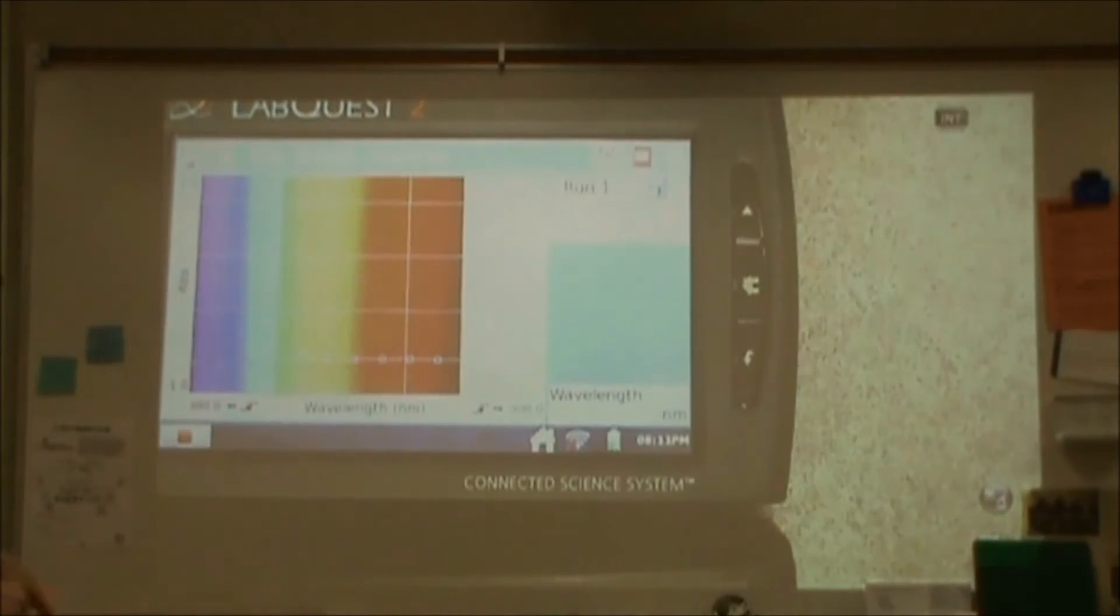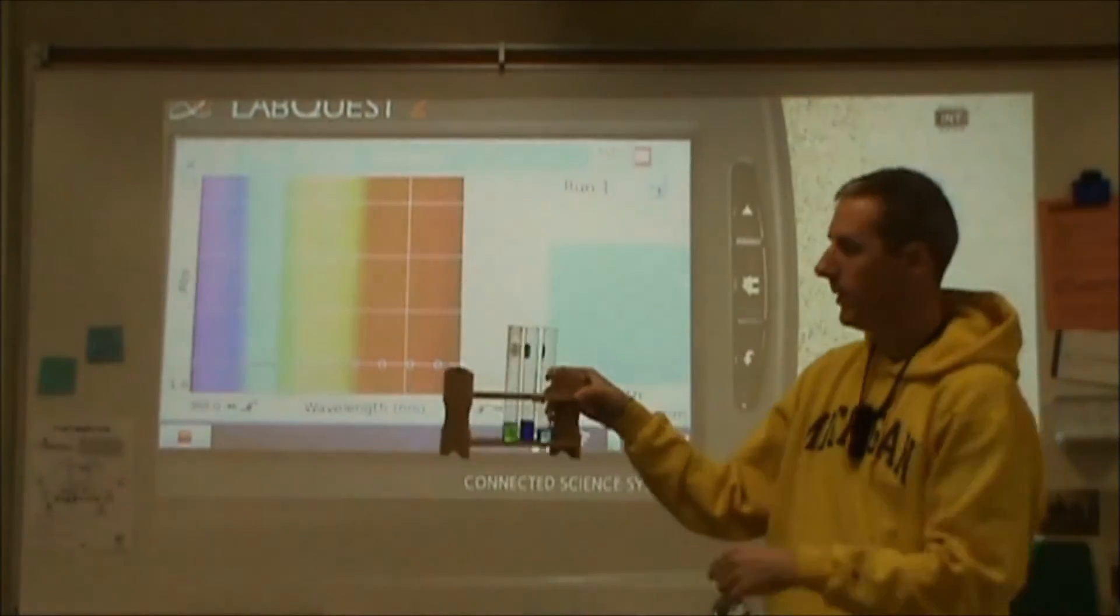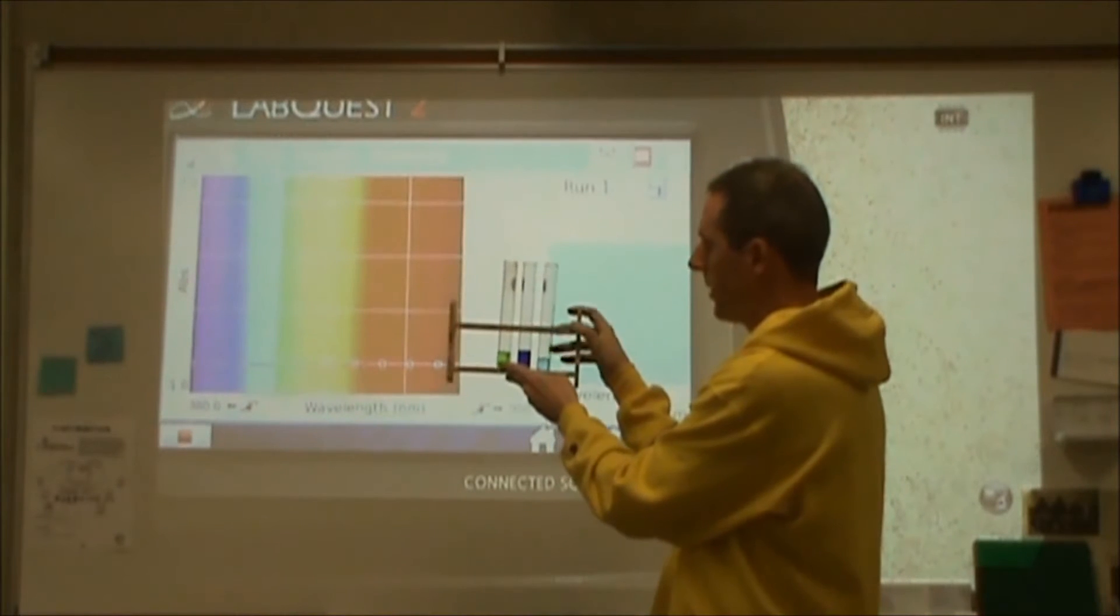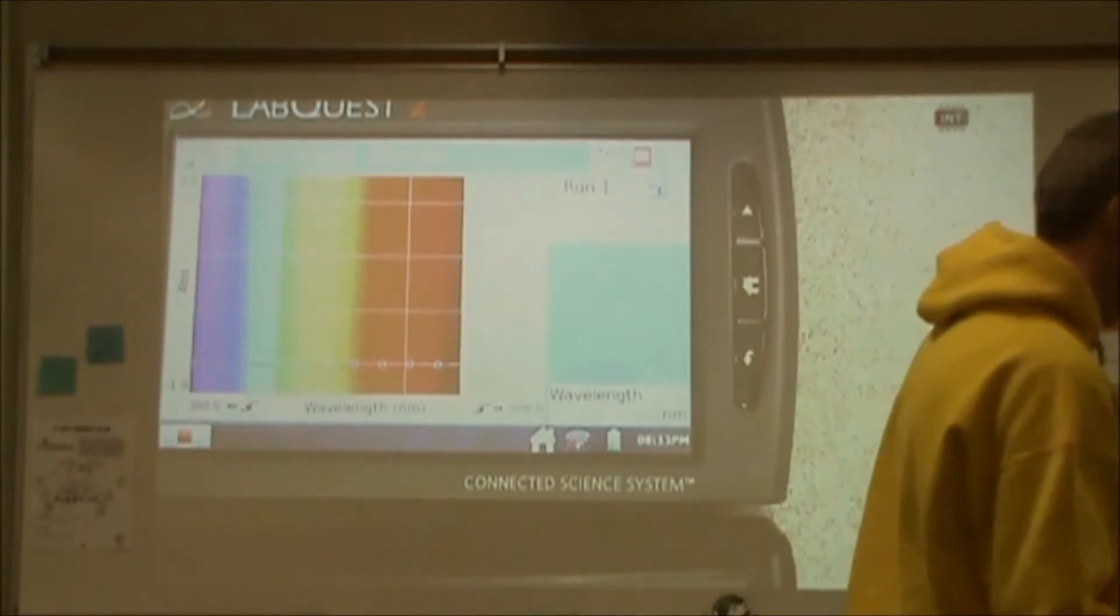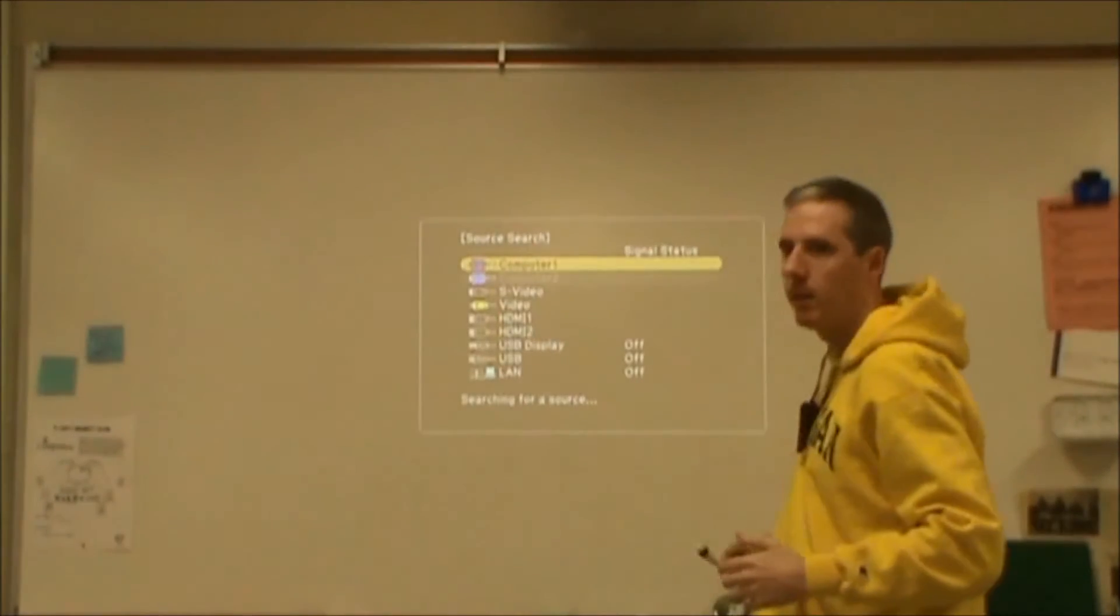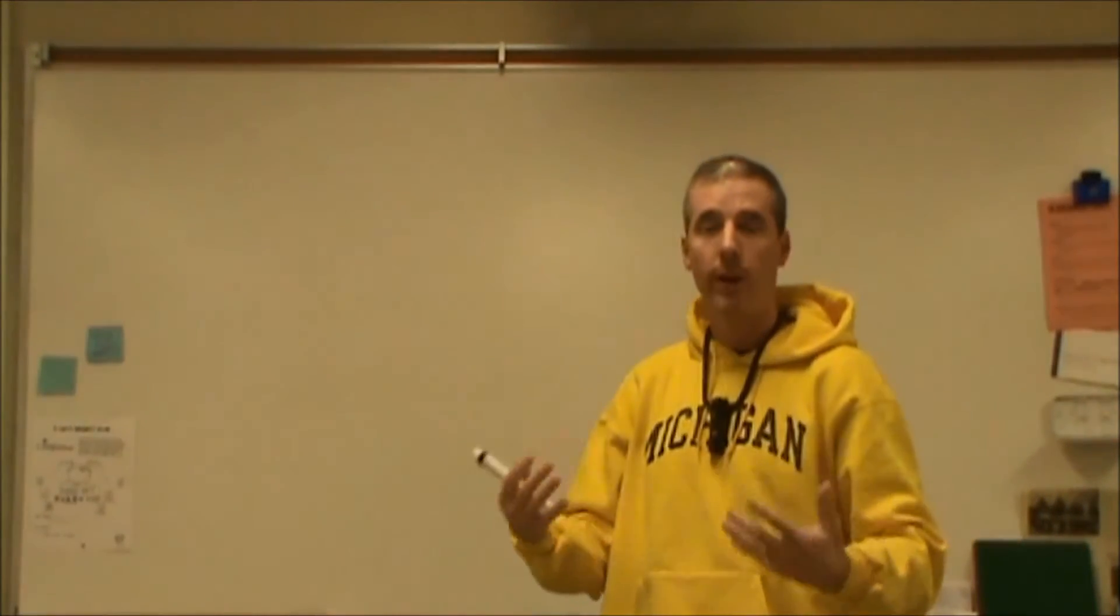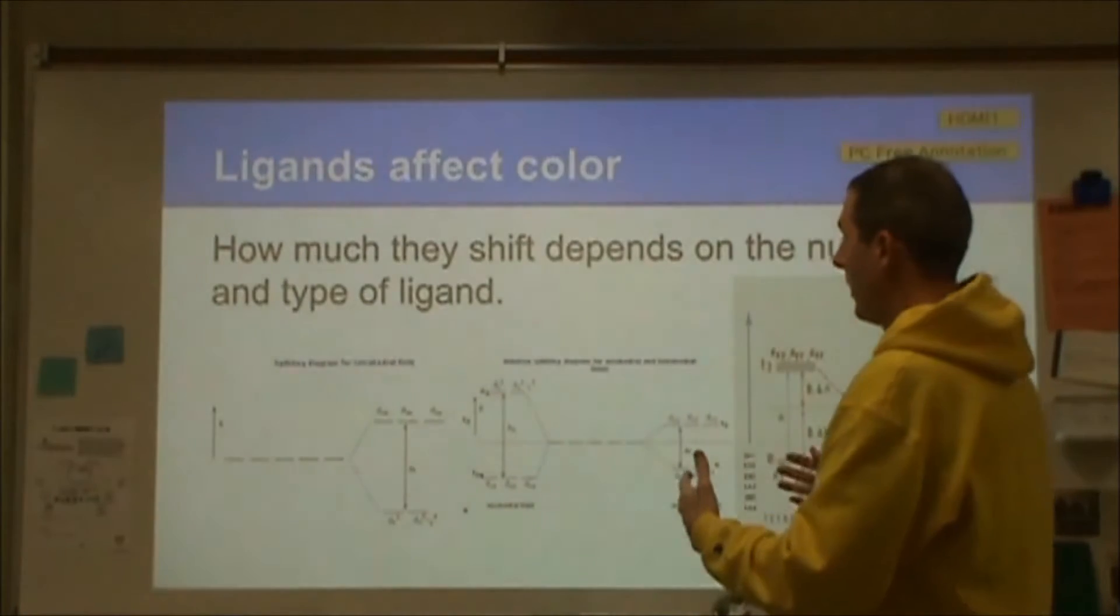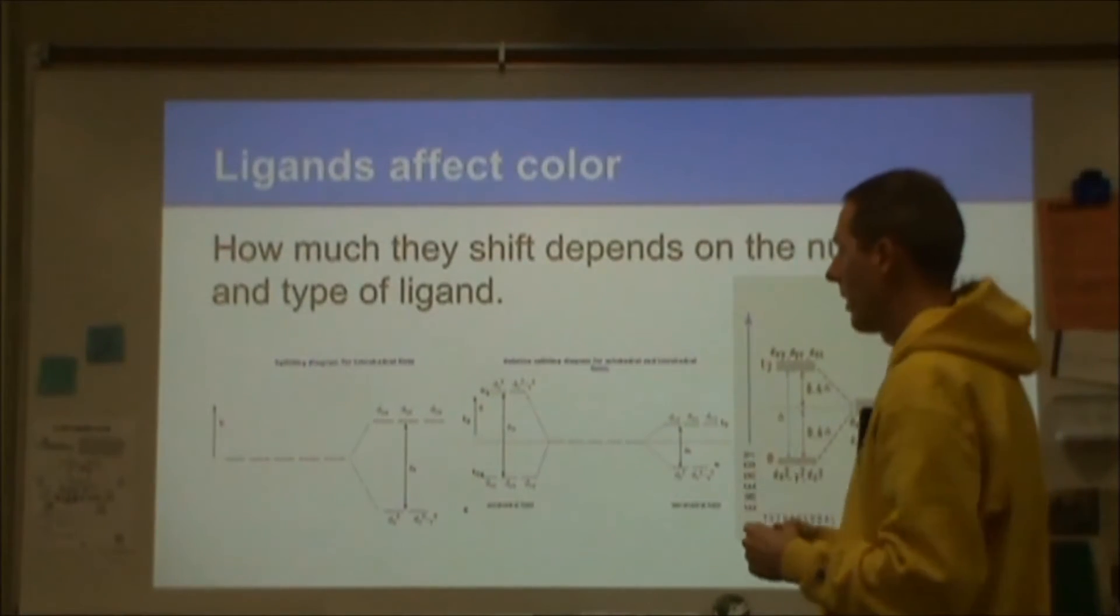Now, why is that happening? Why is it that this transmits the colors except for green? Hopefully at this point you have an understanding that when we're looking at light, we're looking at electrons being promoted to a different state of motion, a different energy state, and then the electrons are coming back down and giving that light back off in another direction.